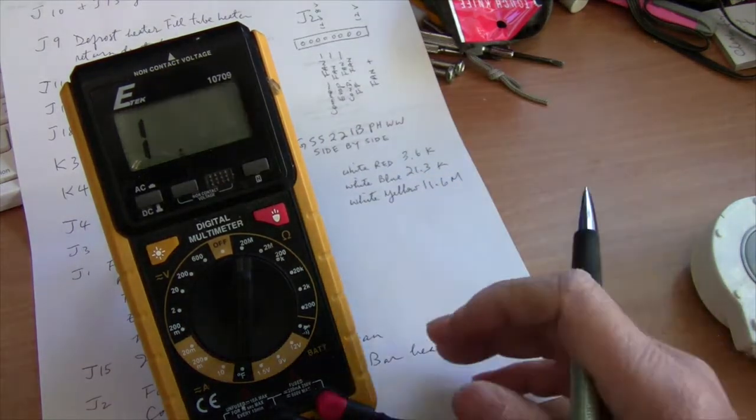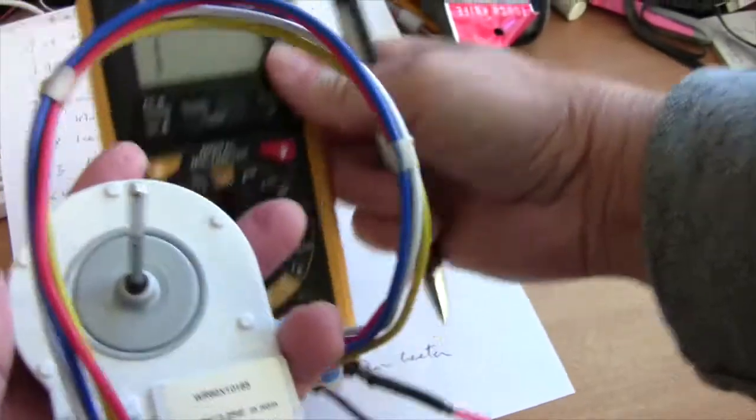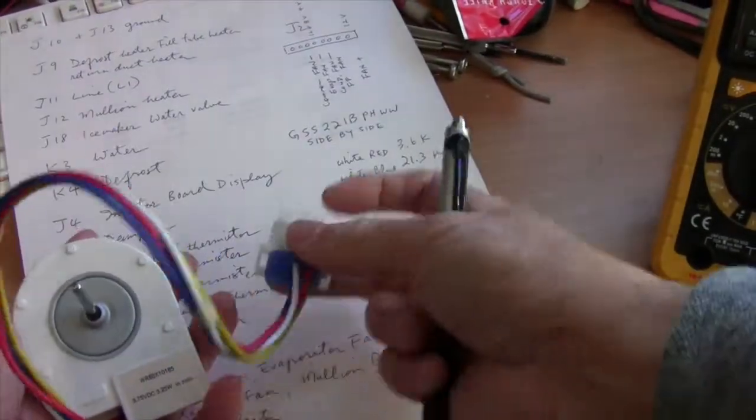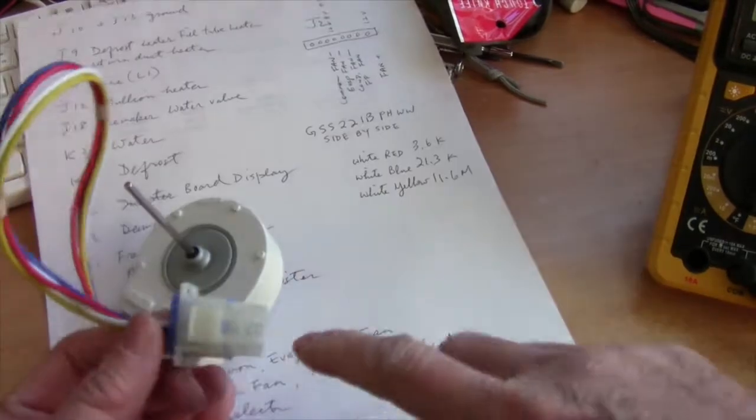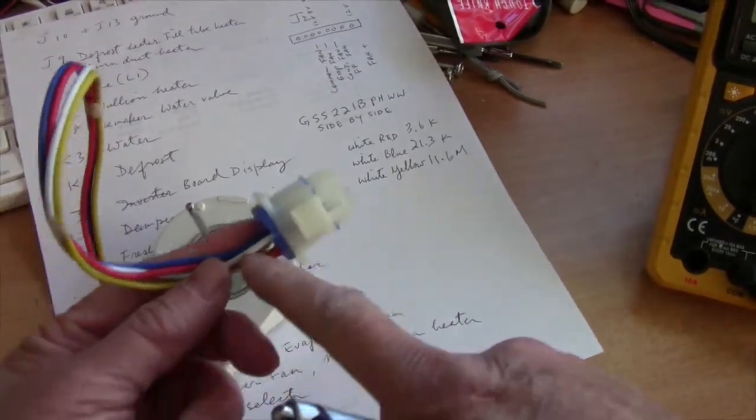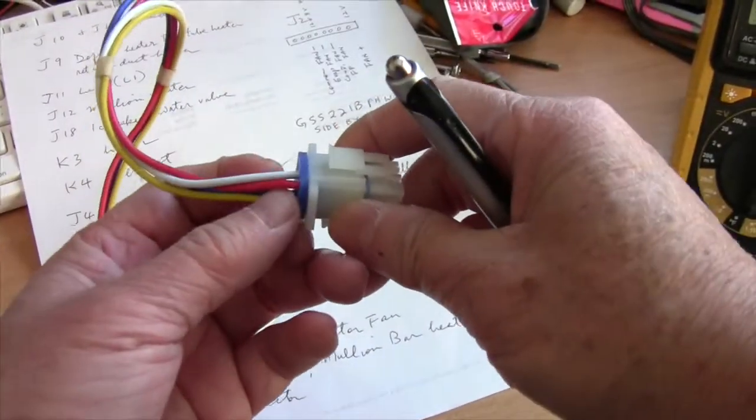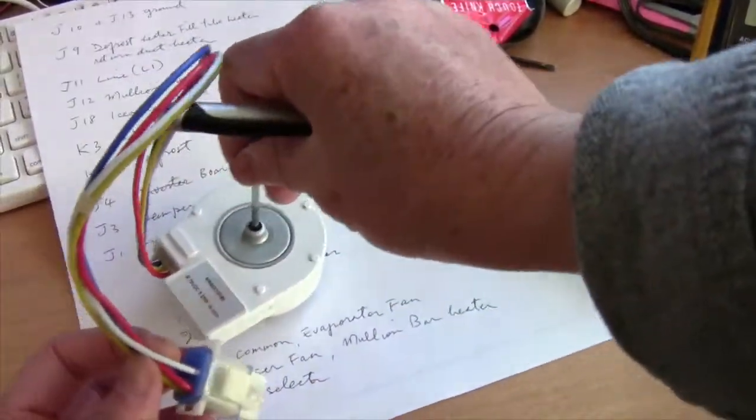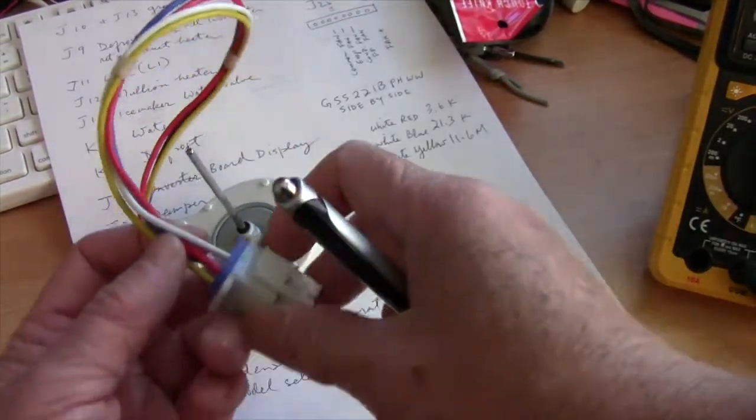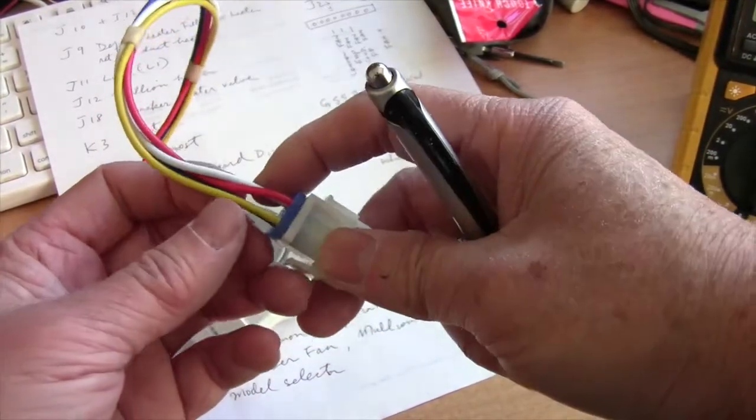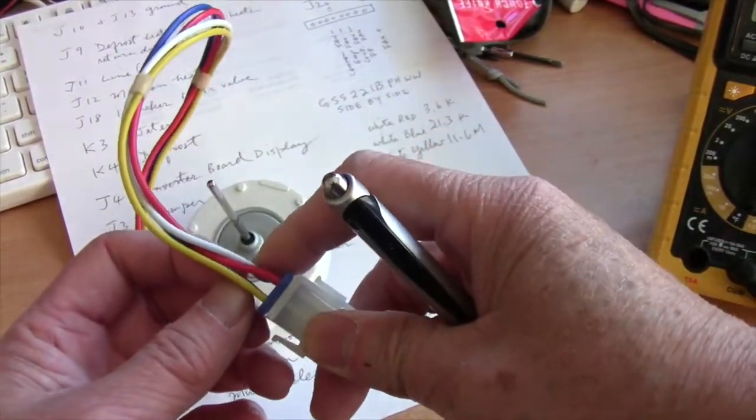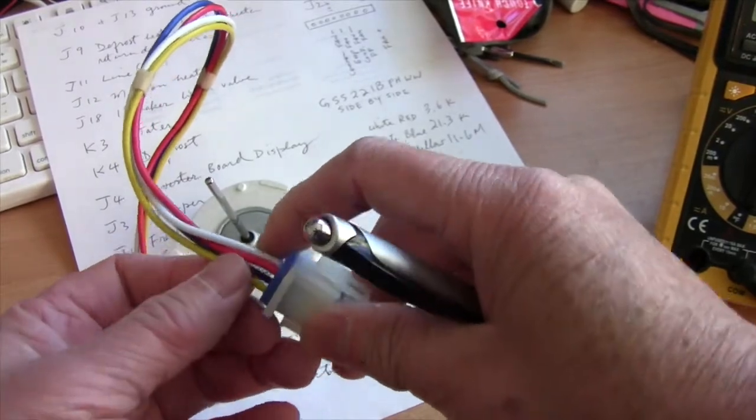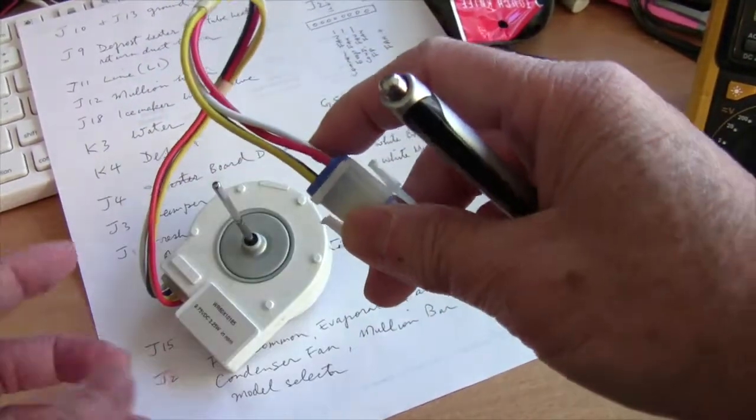So those will be the values for your fan motor. You can also, of course, apply a 12 volt DC voltage to this. This is the ground and the red would be the positive power wire, 12 volt. You'll see the motor turn, or the white and the blue would be a lower speed. And then the white and the yellow would be the lowest speed.